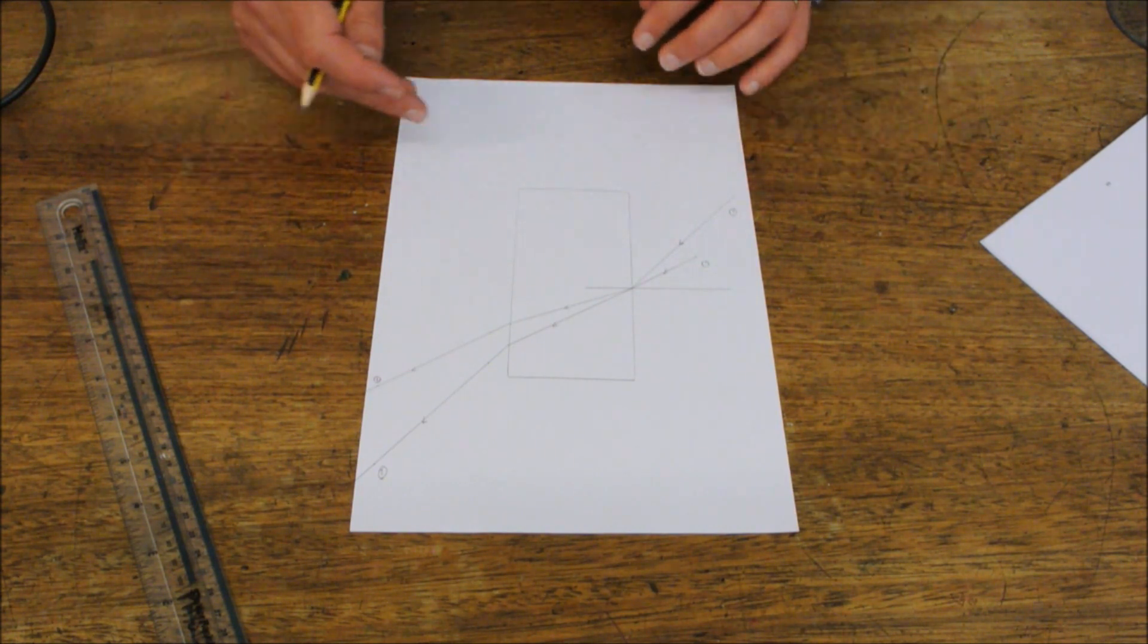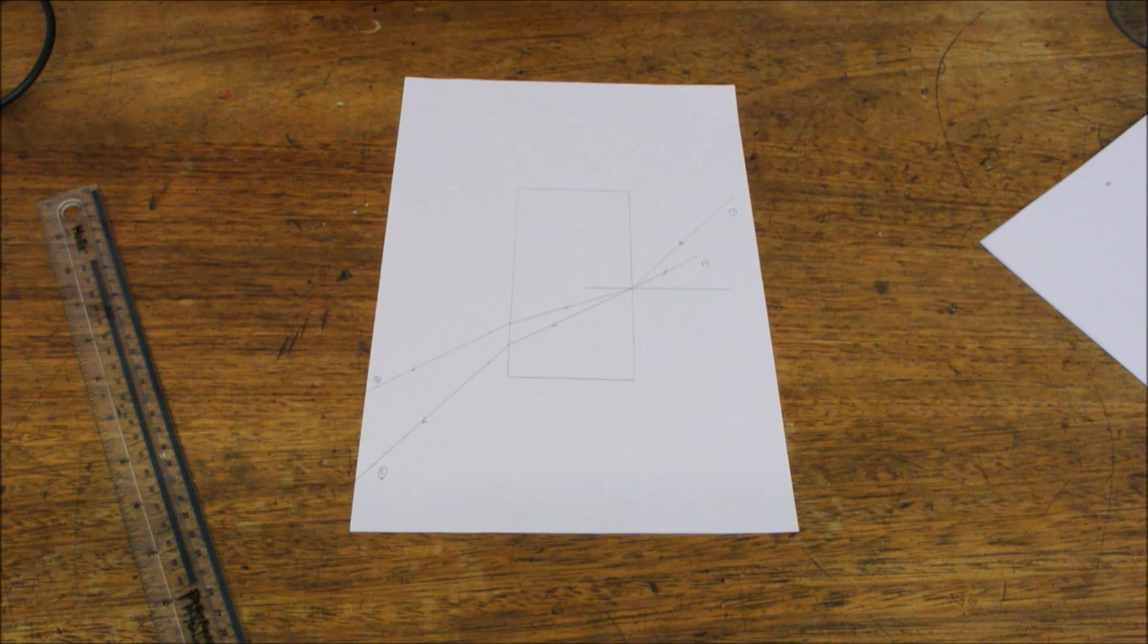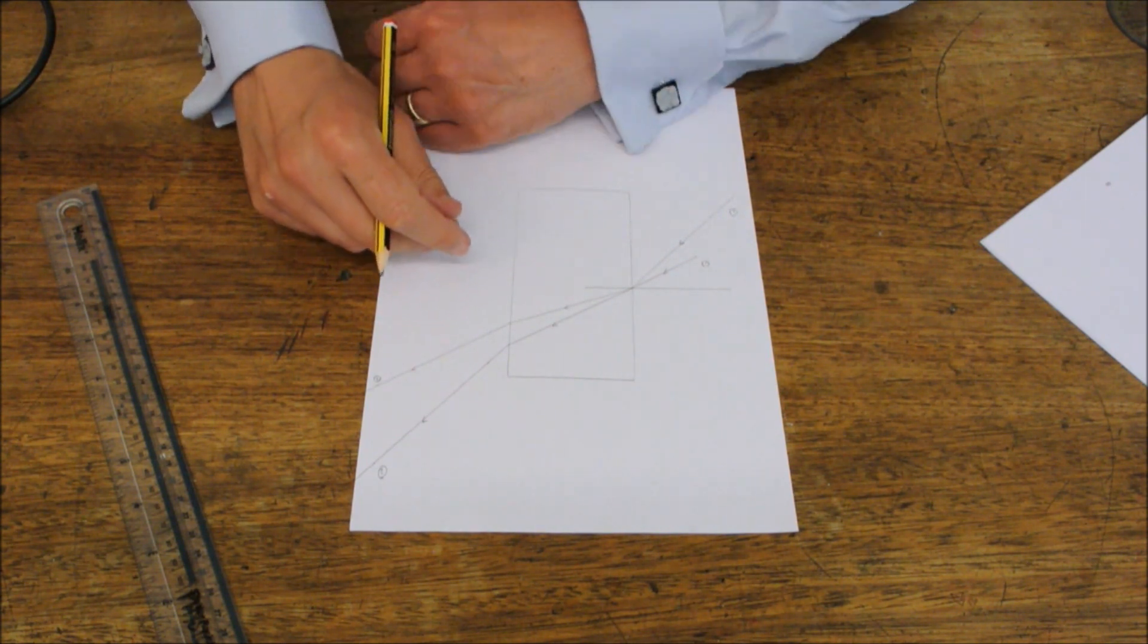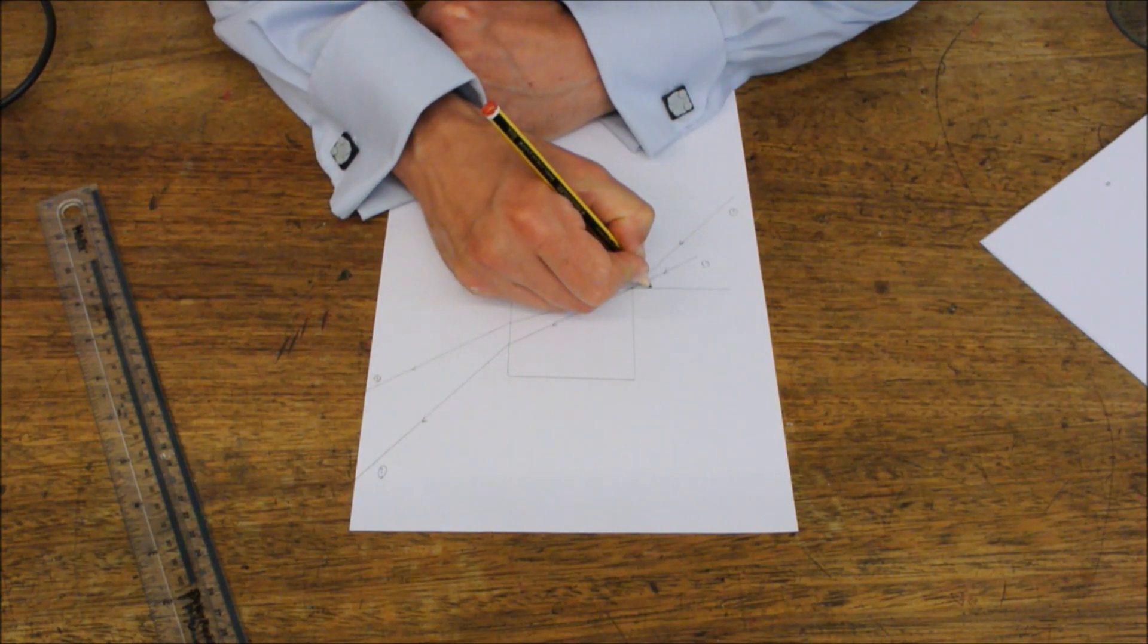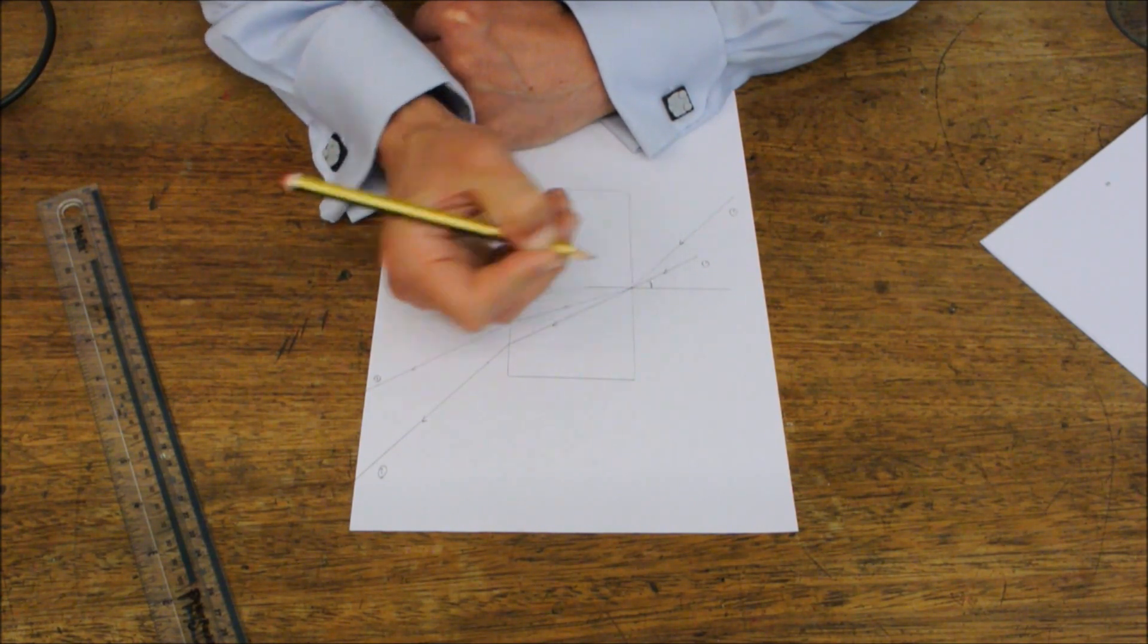So the final part of this practical is for us to measure the angles of refraction and incidence. The first angle that we're interested in is the angle of incidence for ray one, which is that angle there.